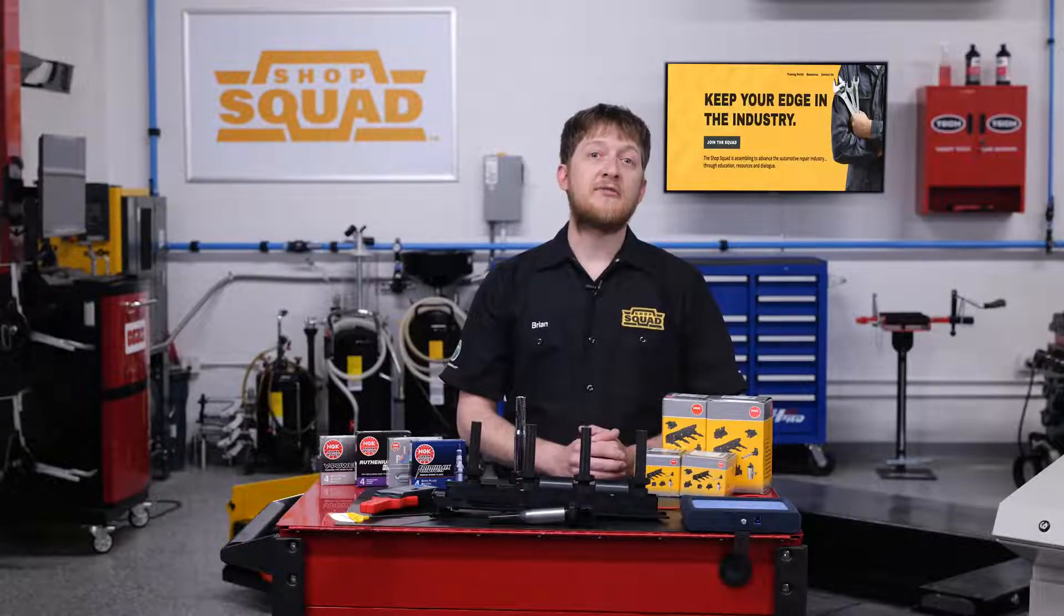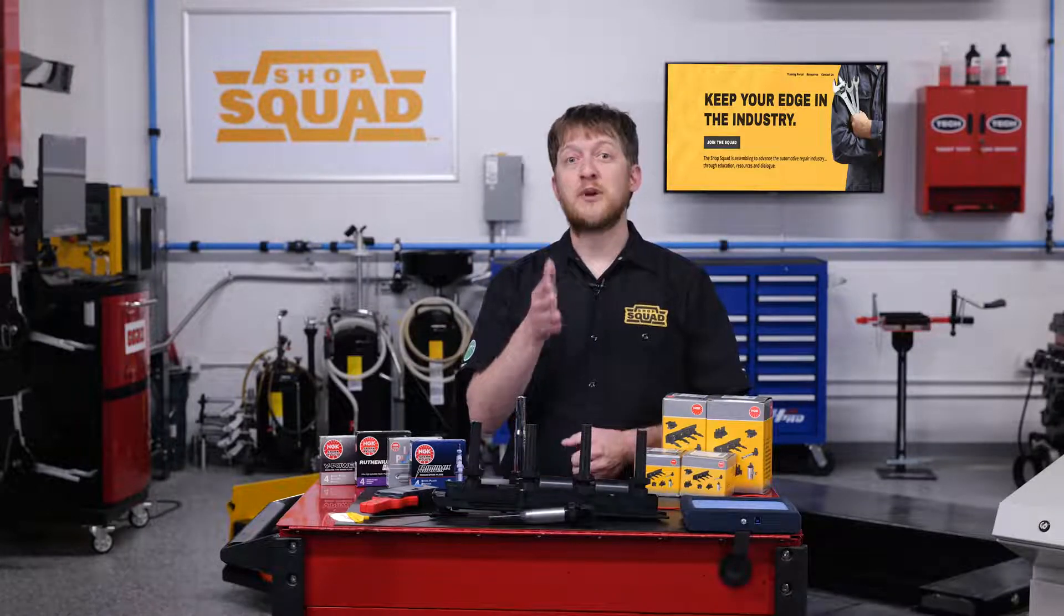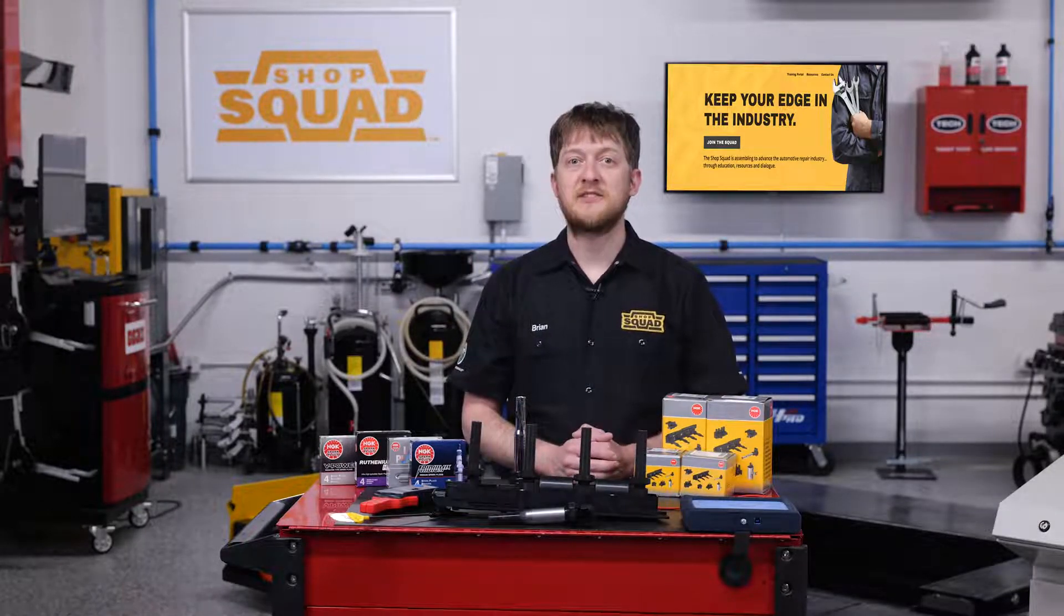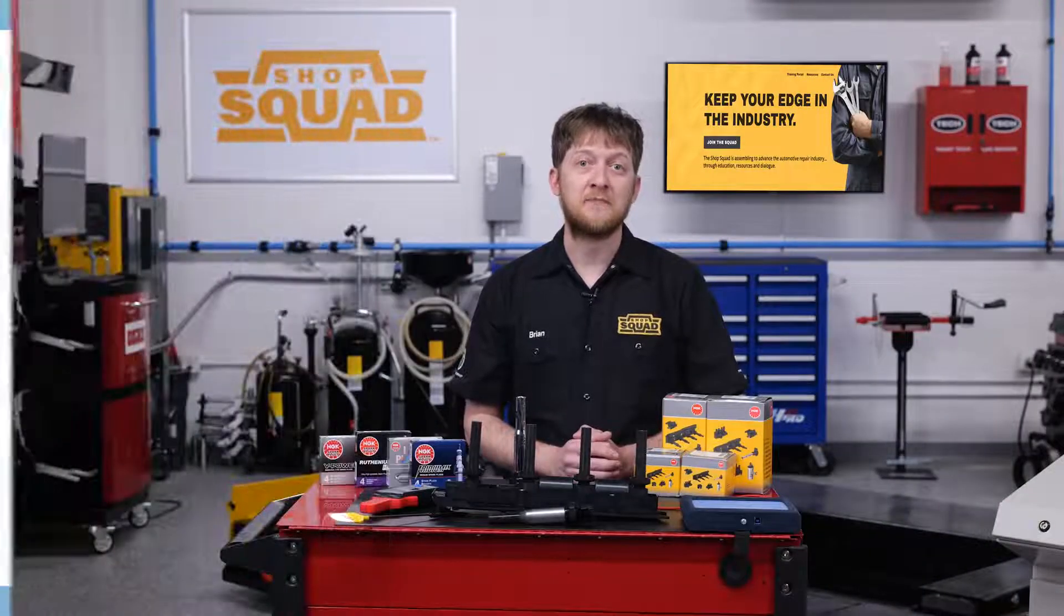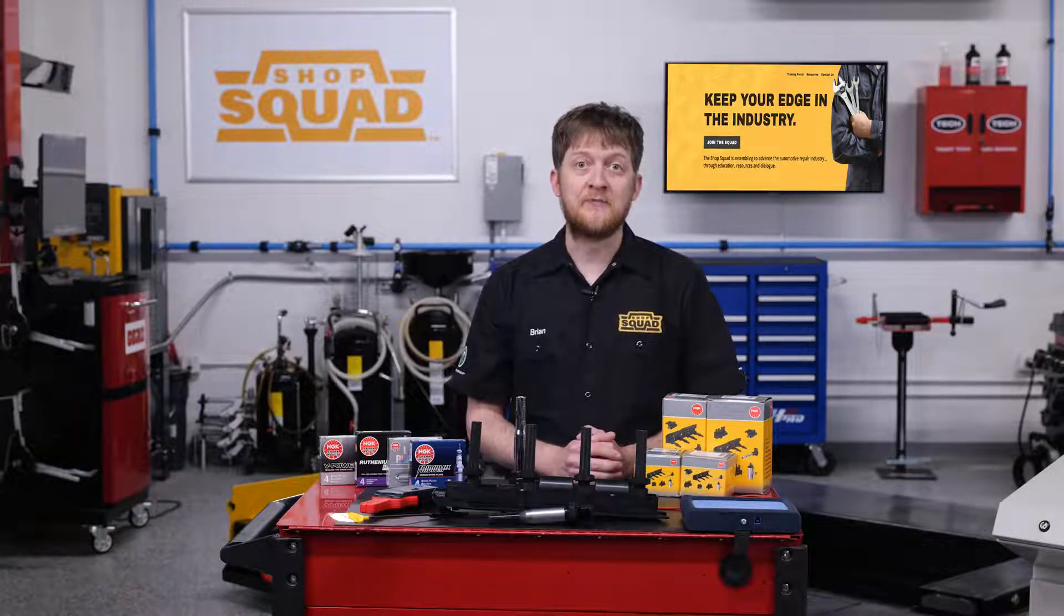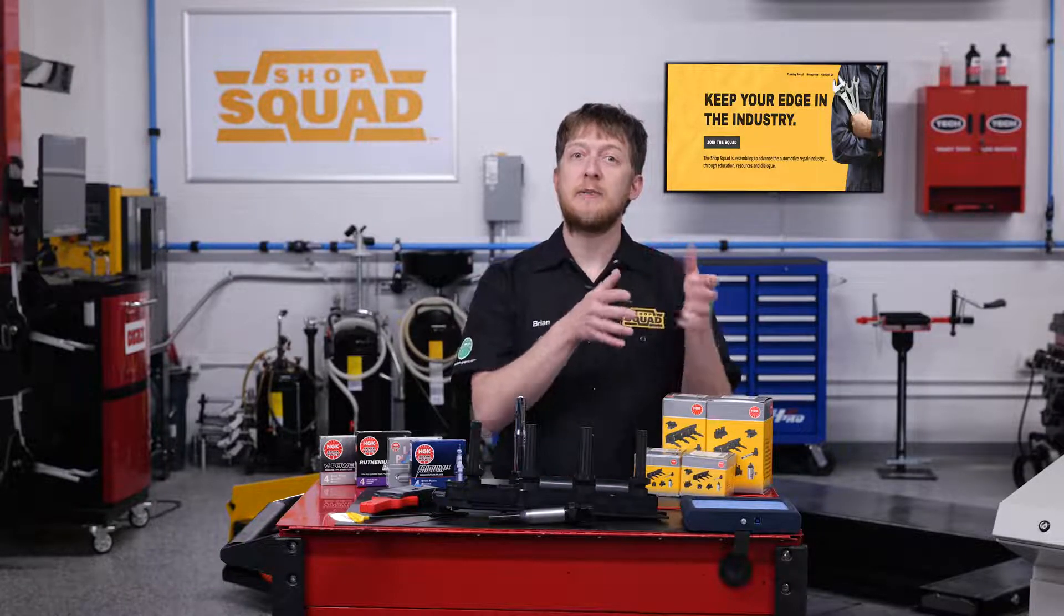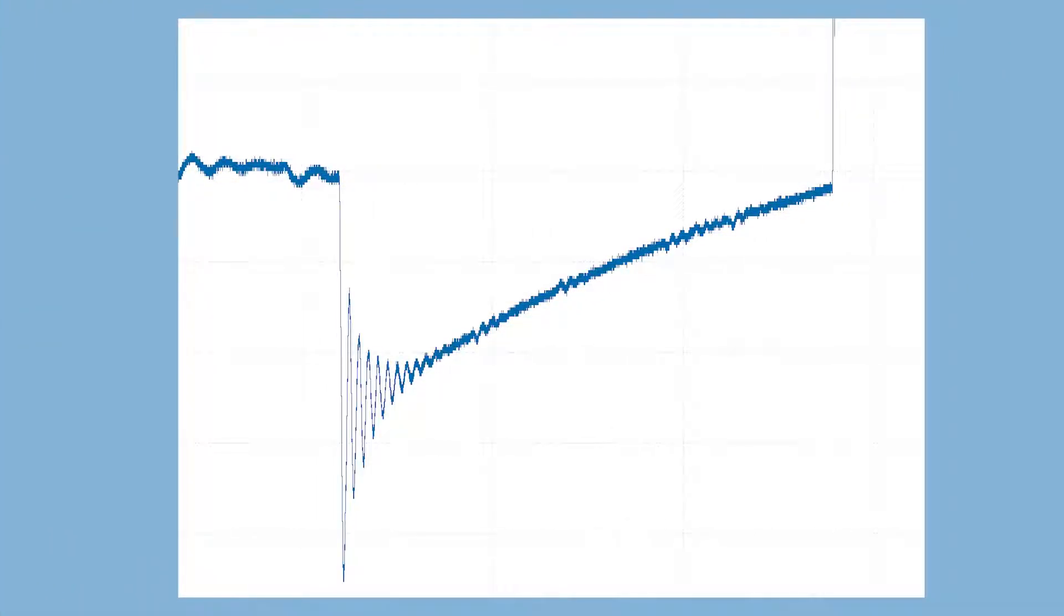The first part of the waveform is the charging of the secondary coil by the primary. This is where the energy of the primary saturates the secondary coil. There will be an initial sharp voltage drop followed by a sine wave that is a coil oscillation. This oscillation is the module turning on power to the coil. As the secondary becomes saturated, the line will slowly go up in a steady ramp. The critical shape of this part of the waveform should be a smooth ramp upwards. It can change due to demands on the engine.